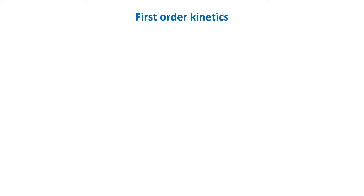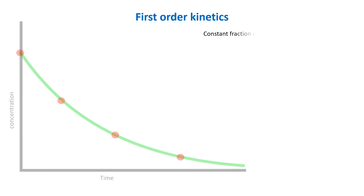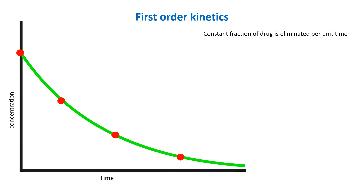What is first-order kinetics? With first-order elimination, a constant proportion or fraction of drug is metabolized per unit time. The plasma drug concentration reduces by the same percentage from the total concentration at one particular time as elimination begins.